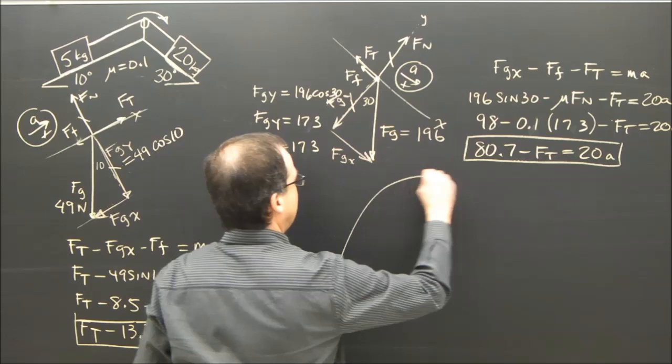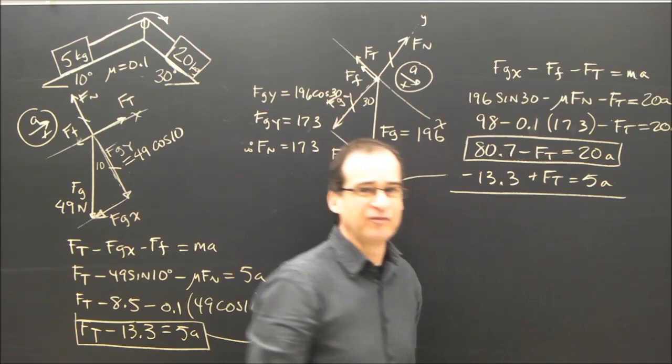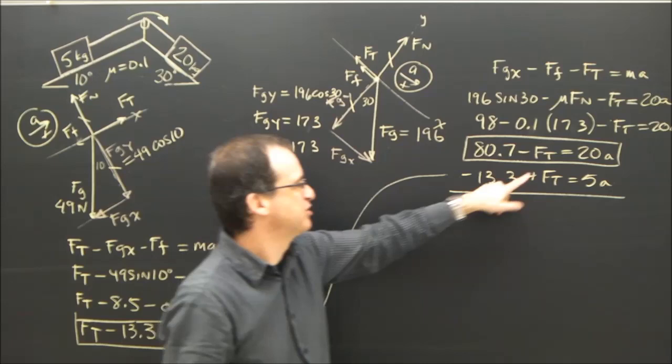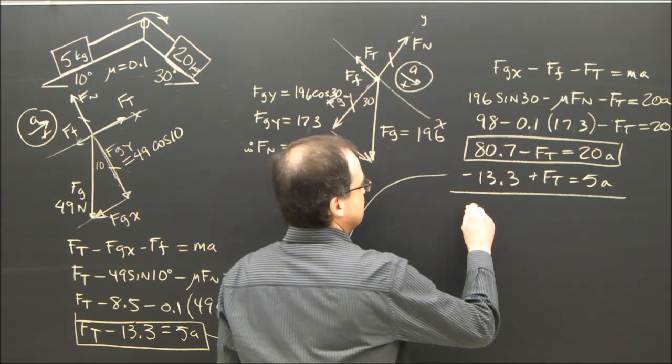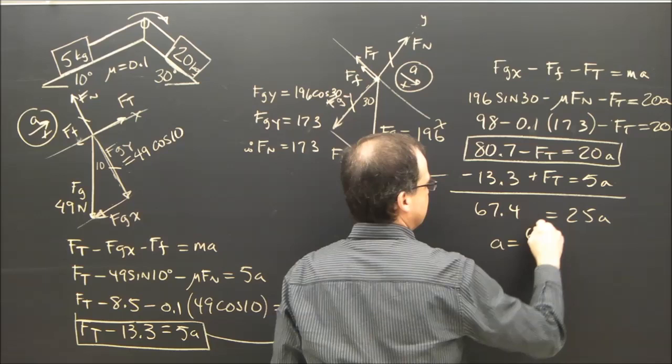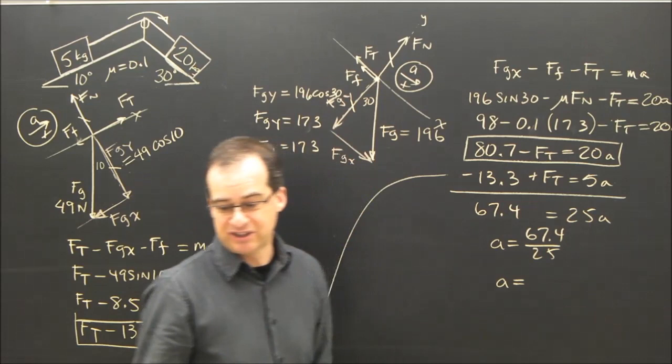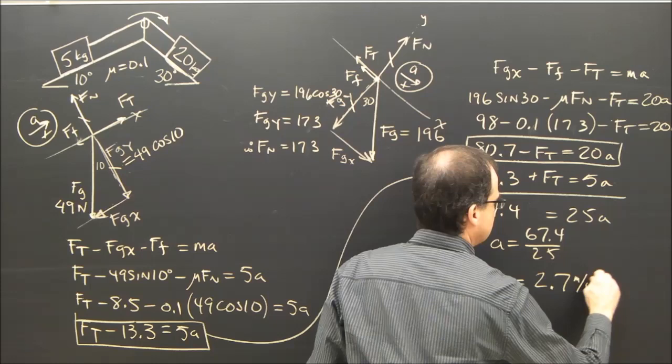So I've got the equation for this one. I've got the equation for this one. I need to now put them together. So I bring this over here, and I rearrange negative 13.3 plus ft equals 5a. And just like in every example of this, we have the one equation and the other equation. If you add the two equations up, the ft's will drop out. So you get 80.7 minus 13.3, 67.4. Negative ft, positive ft is 0 equals 20 plus 5 is 25a. A equals 67.4 divided by 25. A is equal to 2.6 something, 6.9 or something. So I'm going to round it off to 2.7 meters per second squared.